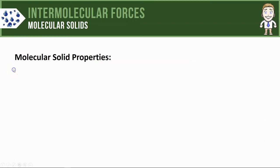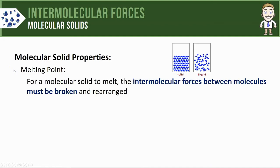Starting off with melting point: to melt a solid, in particular for a molecular solid to melt, the intermolecular forces between the molecules must be broken. You can imagine looking at the solid structure here and then the liquid structure over here. To change it from solid to liquid, it should be pretty apparent that you have to allow those particles to start to move.